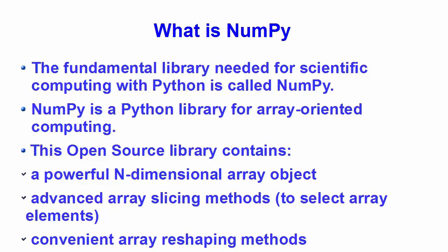This library also contains advanced array slicing methods to select array elements and several convenient array reshaping methods. In other words, we can say that NumPy is a Python library for array oriented computing. Besides its obvious scientific uses, NumPy can also be used as an efficient multidimensional container for generic data. NumPy has a powerful n-dimensional array object — an n-dimensional array of homogeneous data types with many operations being performed in compiled code for performance.